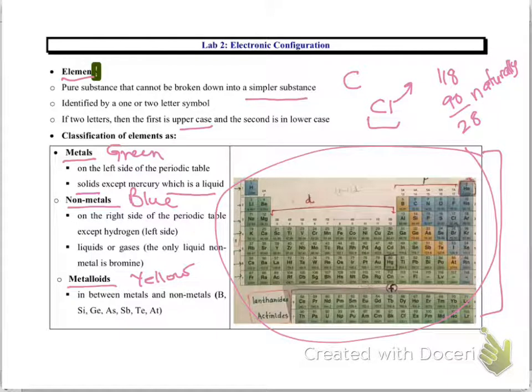Non-metals are on the right side of the periodic table except one - hydrogen, which is on the left side. Non-metals do not have a shiny appearance. They are poor conductors of heat and electricity.